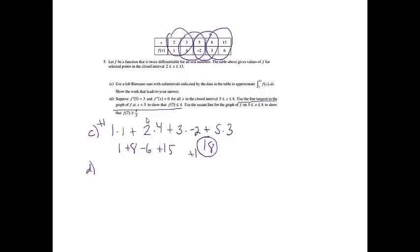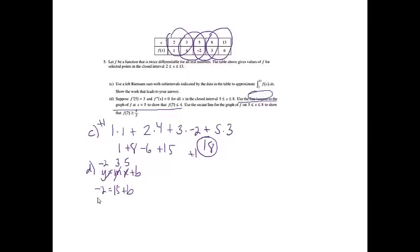We're going to use the tangent line to show something, so I need a tangent line. Using y equals mx plus b, we know m is the derivative, and they told me at x equals 5 the derivative was 3. The x value is 5, and from the chart, when x equals 5, y equals negative 2. So negative 2 equals 15 plus b, giving b equals negative 17. The equation of the tangent line is y equals 3x minus 17.